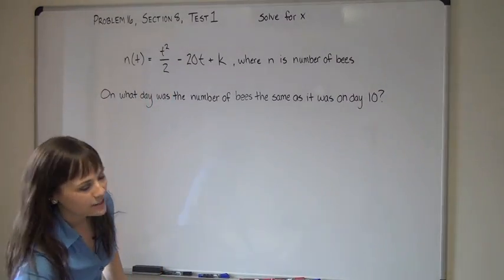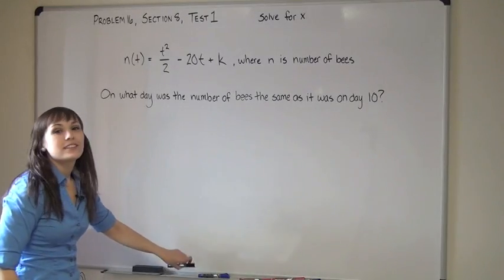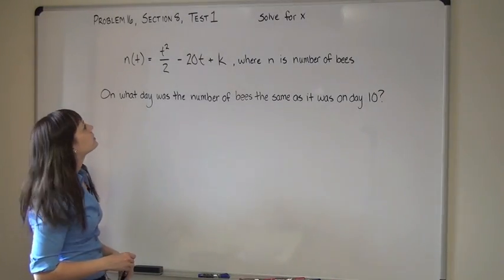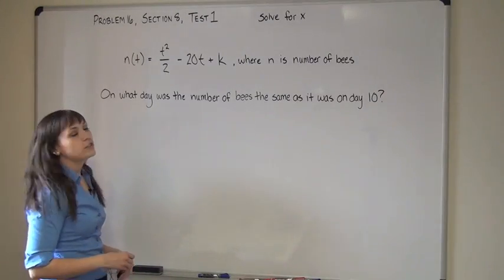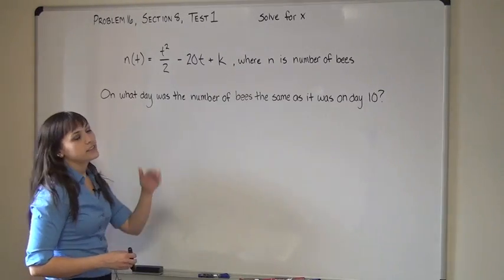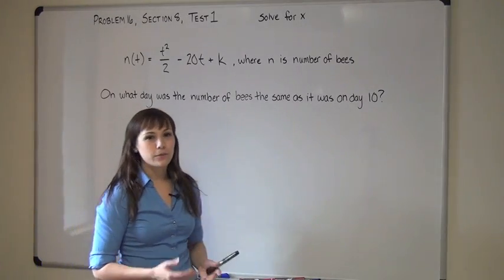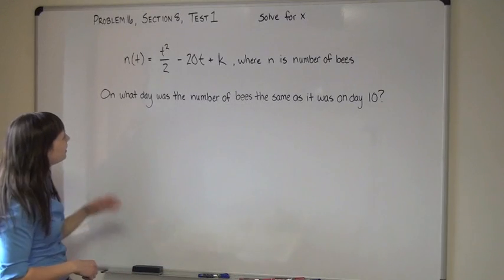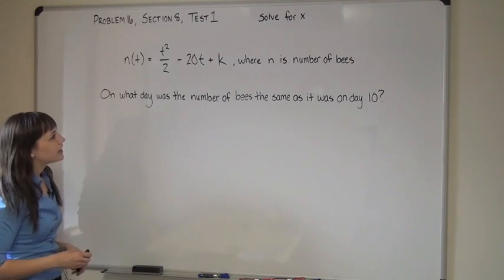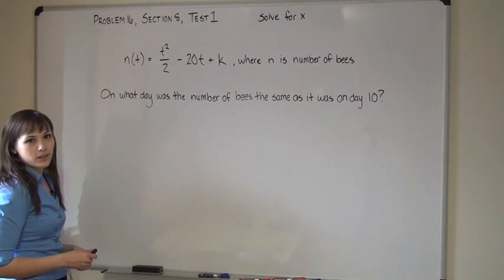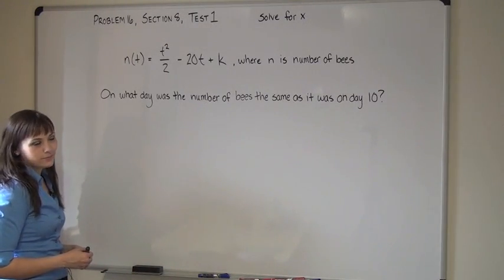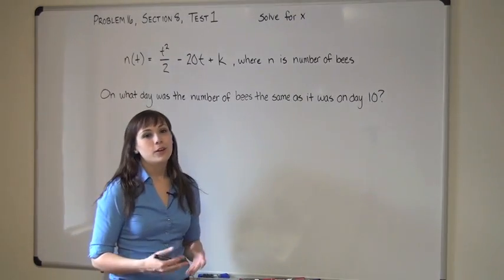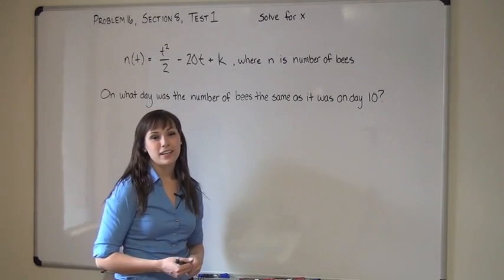This is a solve for x-type problem. It reads like this: n of t is equal to t squared over 2 minus 20t plus k, where n represents the number of bees in a hive. The question asks, on what day was the number of bees the same as it was on day 10? So to get started on this problem, we need to find out how many bees there were on day 10.